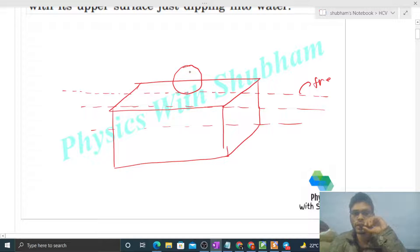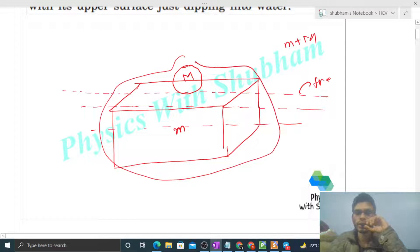So again we define our system. Let's say mass of this cube is small m and mass of this lead is capital M. And my system is small m plus capital M. And this system floats, which means the net force on the system in vertical direction must be zero.